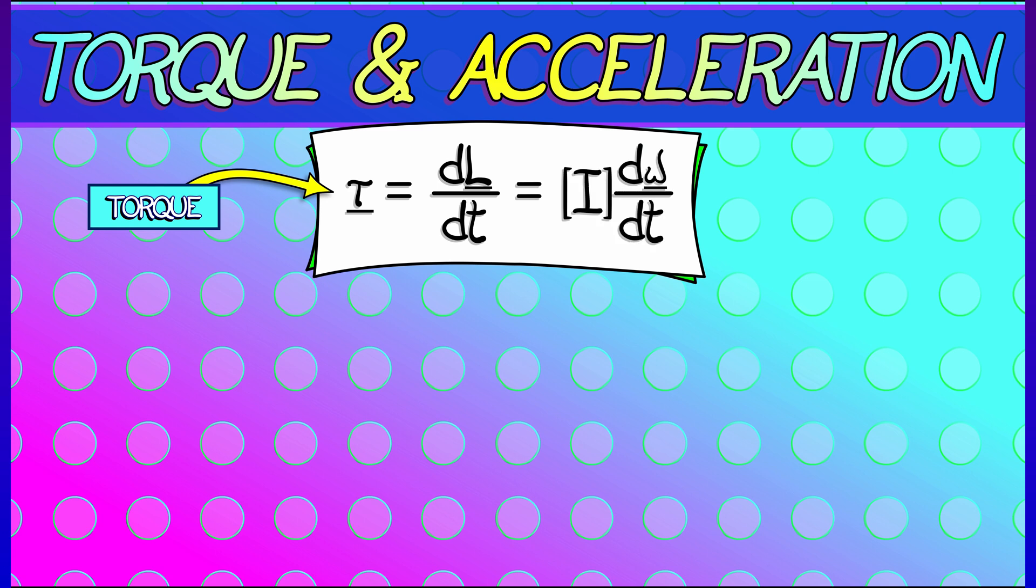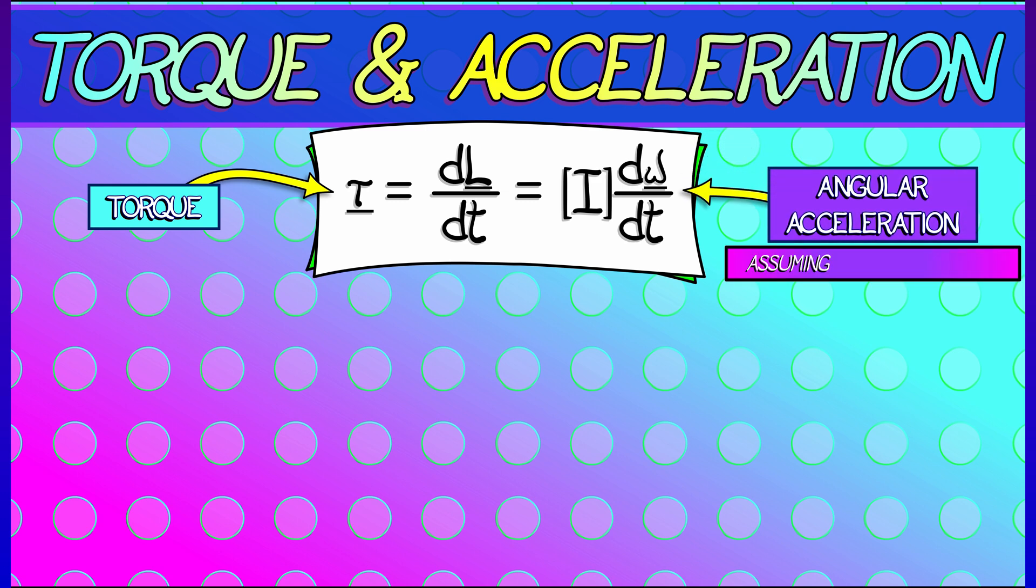It's dL/dt, which we can write as I times dω/dt, where by dω/dt I mean the angular acceleration. Now, this holds assuming that the inertia matrix is constant.